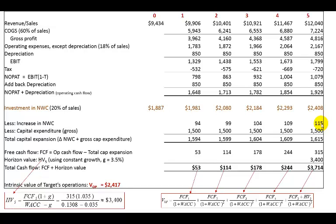Capital expenditures amount to $1,500 per year. Adding the incremental NWC investment and the capital expenditures together gives the total additional investment in operating capital.